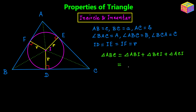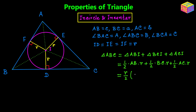The area of triangle ABI would be half times AB times r, because r is the height of the triangle — if we consider AB as the base, then FI is the height which equals the inradius r. Similarly, the area of BCI can be written as half times BC times r, and the area of ACI as half times AC times r. Taking half times r as a common factor, we are left with AB plus BC plus AC.